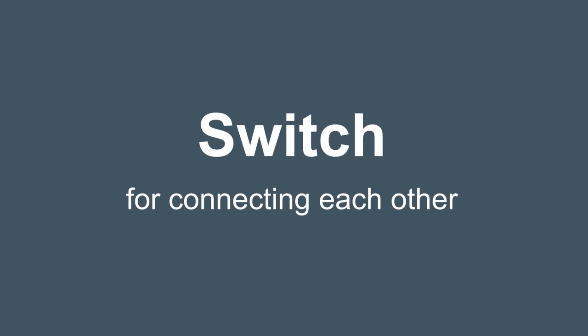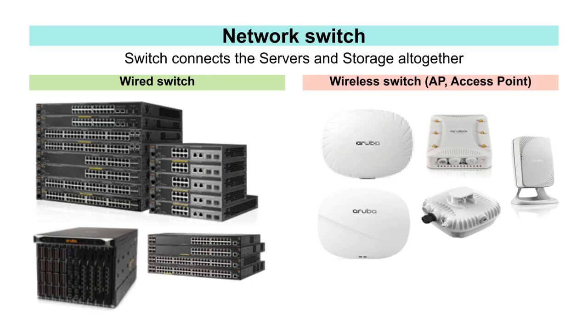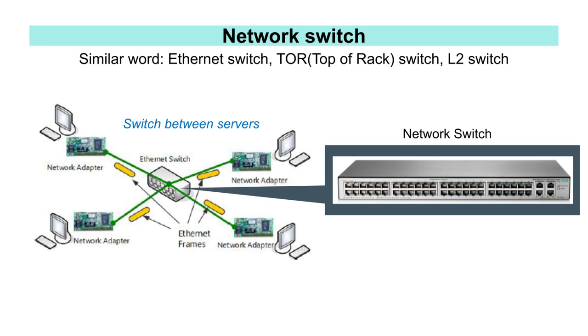Next is the switch. The switch serves to connect and enable communication between each IT infrastructure component — such as servers and servers, and servers and storage — either wired or wirelessly. There are wired switches and wireless switches. A wireless switch is commonly called an AP or access point. We also have these wired and wireless switches at home — usually one AP rented from a telecommunication company, and a wired switch above it where each home's APs are connected. Other terms for these network switches include Ethernet switch, TOR switch, and L2 switch — they are almost the same term.